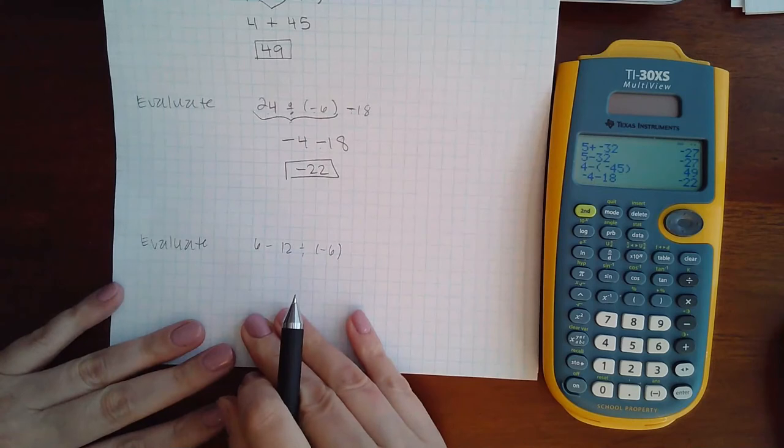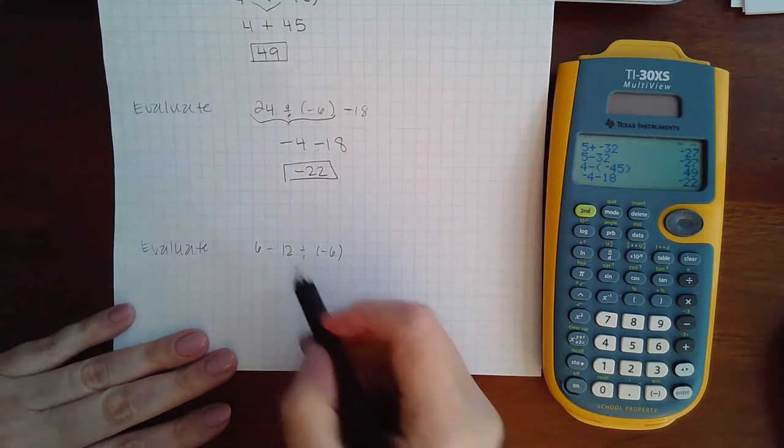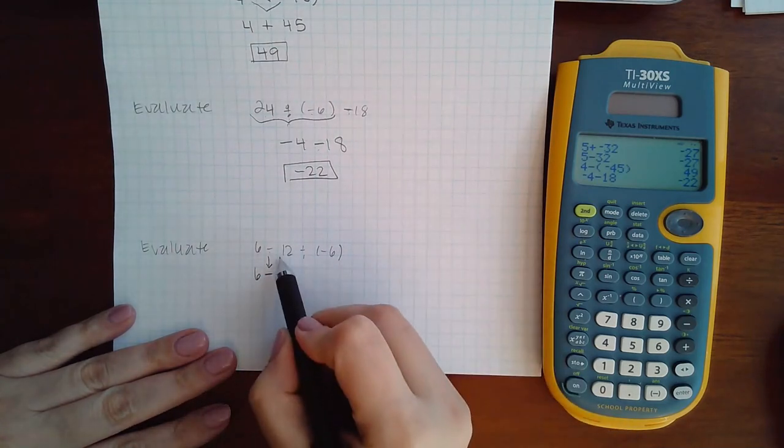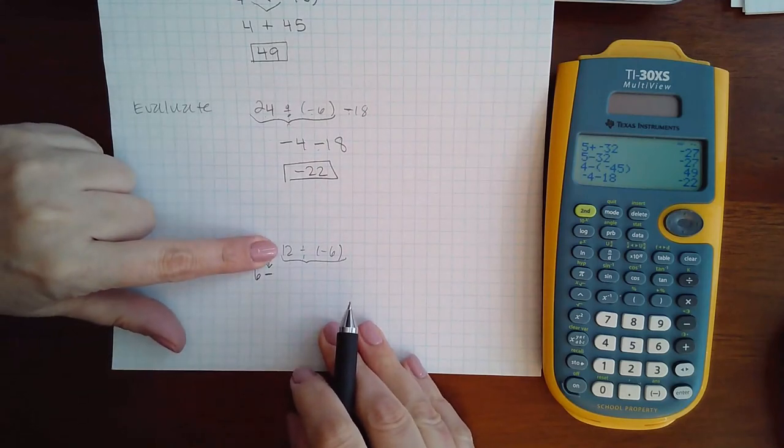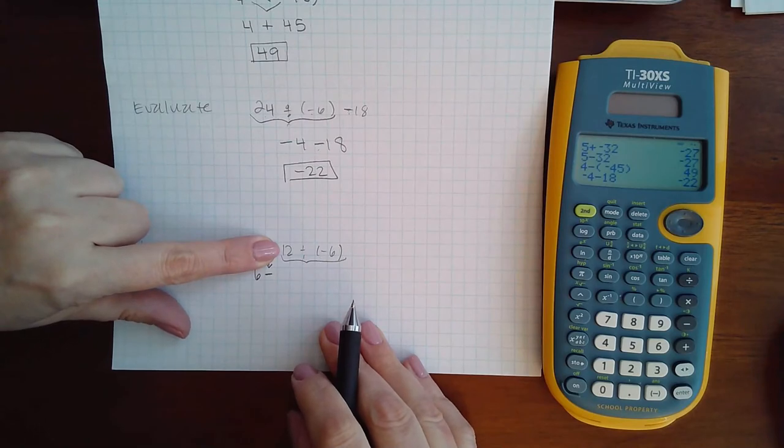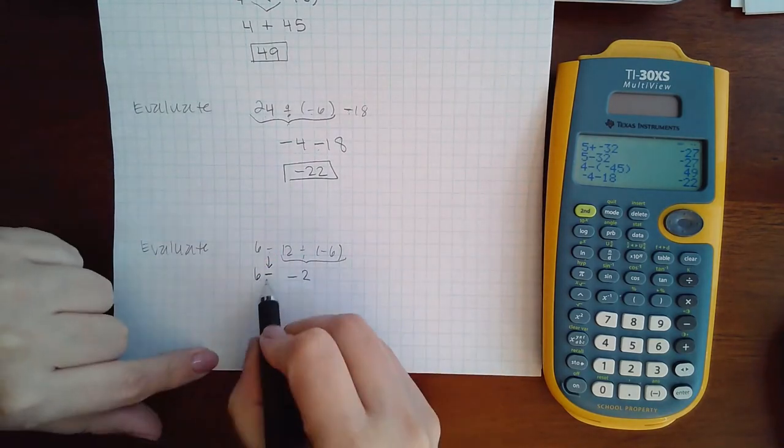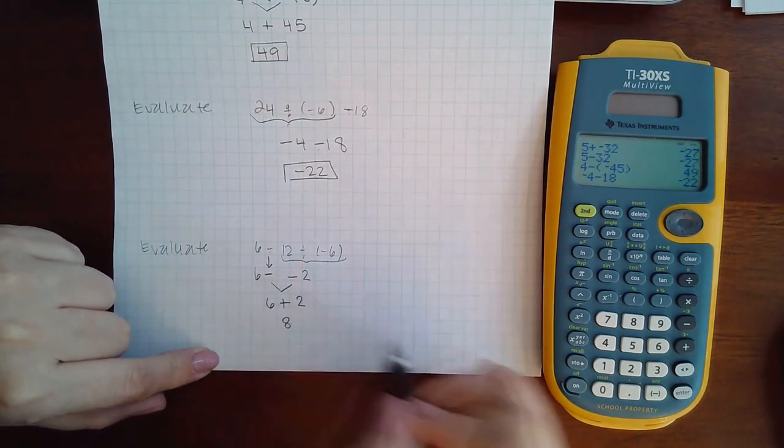Here's the last one. I do have to do multiply and divide before I can subtract. I'm going to write 6 and bring down this minus. I'm only going to be doing 12 divided by negative 6, and a positive 12 divided by negative 6 is a negative 2. Then I have the double signs again, so it becomes 6 plus 2 which equals 8.